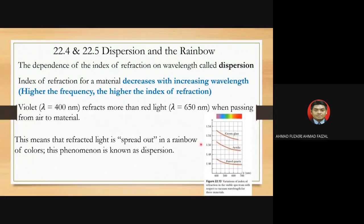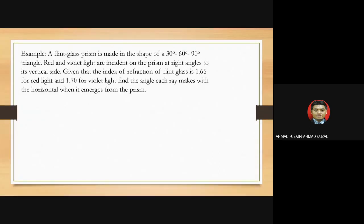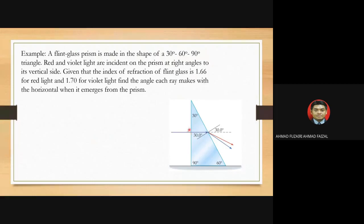A table shows the variation of index of refraction across the visible spectrum for three materials. To understand dispersion, consider what happens when light strikes a prism. A flint glass prism shaped as a 30-60-90 triangle has red and violet light incident at right angles to its vertical side. The index of refraction of flint glass is 1.6648 for red and 1.7 for violet. Find the angle each ray makes with the horizontal when it emerges from the prism.